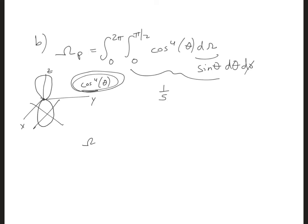So we're going to get beam pattern solid angle is 2 pi times 1 fifth, or 2 pi over 5. And that's in units of steradians, which is about 1.26 steradians.